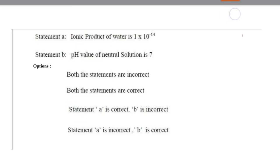Next question: two statements are given. Statement A: the ionic product of water is 1 × 10⁻¹⁴. Statement B: the pH value of a neutral solution is 7. The options were both incorrect, both correct, A correct B incorrect, or B correct A incorrect. We know that both statements are correct — the ionic product of water is 1 × 10⁻¹⁴ and neutral solution pH is 7. So option 2 is correct.